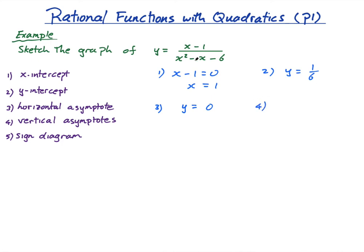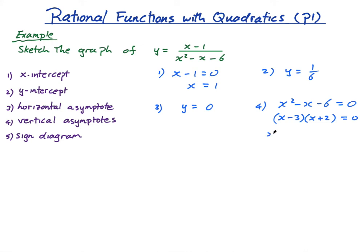Step four: the vertical asymptotes. Vertical asymptotes occur when the denominator equals zero — as the denominator approaches zero, the function approaches infinity because you're dividing by a really small number, and you can't divide by zero, so you get an asymptote. Setting x squared minus x minus six equal to zero and factorizing gives (x minus 3)(x plus 2), so x equals three or x equals negative two. These are my two vertical asymptotes.